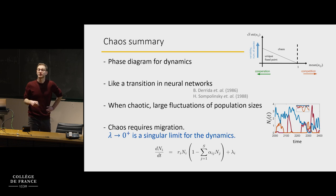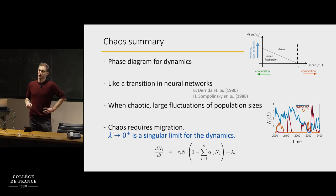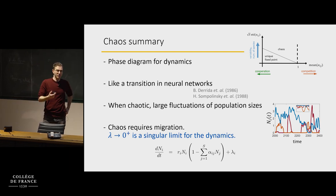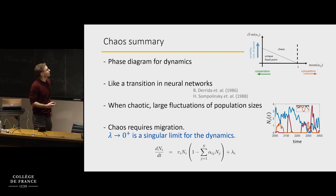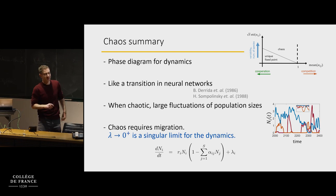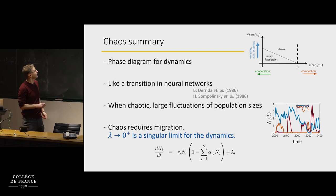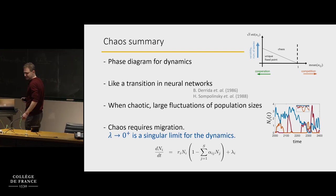More formally, the point I want to make is that chaos, as I've been describing so far, requires there to be migration — this additional term. Formally and mathematically, taking this migration to zero is a singular limit for the dynamics, in a sense I'll try to explain in what follows.